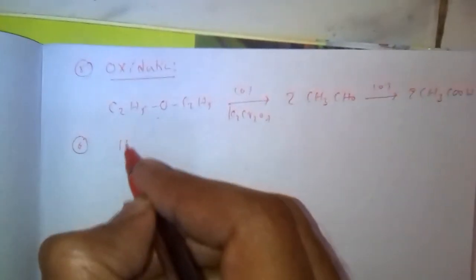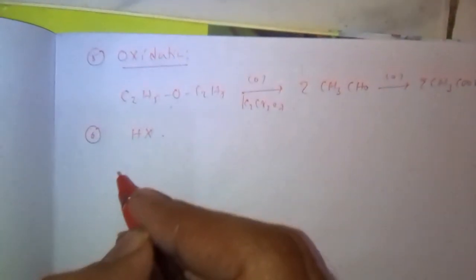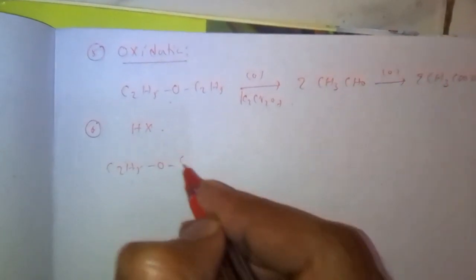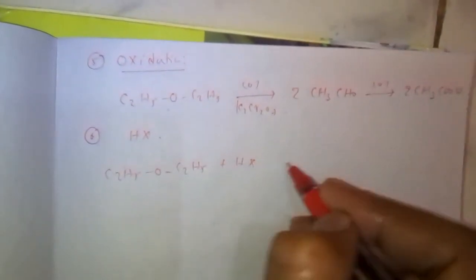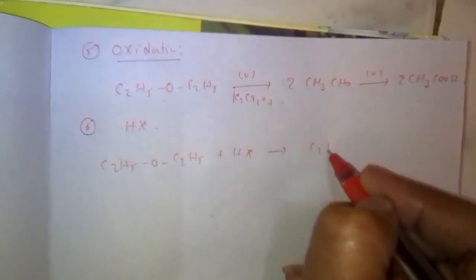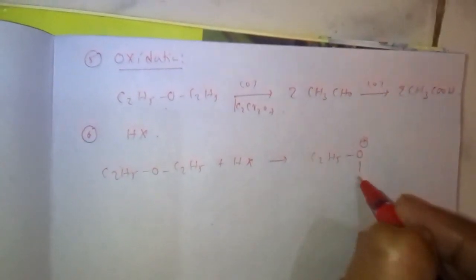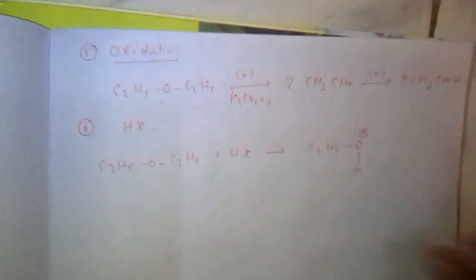Next, reaction with hydrogen halides. When ethers react with hydrogen halides, they form oxonium salts. C2H5-O-H plus attaches to oxygen, and it forms a salt. This salt is known as oxonium salt.